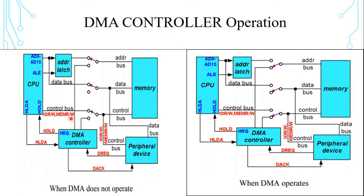Now let's see the DMA controller operation. In the first diagram, when DMA does not operate, the data transfer takes place through the CPU. Here we have the CPU, DMA controller, memory, and peripheral devices. The data is transmitted between memory and peripheral devices through the CPU only. The address bus, data bus, and control bus are connected to the CPU only, whereas the DMA controller is not connected with the switches.